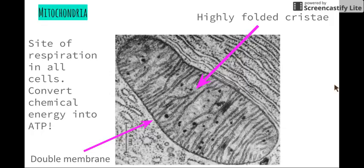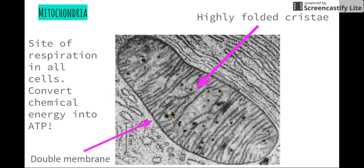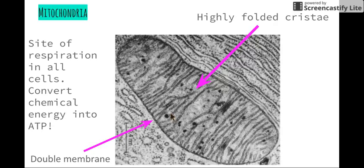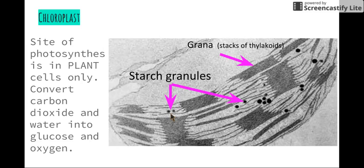Looking at the first one, we have the mitochondria. The mitochondria is the site of respiration in all cells, and it converts chemical energy in the form of glucose and oxygen into usable energy in the form of ATP. Two really important things that help us identify the mitochondria are: firstly, the highly folded cristae — all these little lines on the inside are the inner membrane that is highly folded, allowing the mitochondria to carry out many different chemical reactions simultaneously — and secondly, the double membrane, which is a double layer just like the cell membrane.